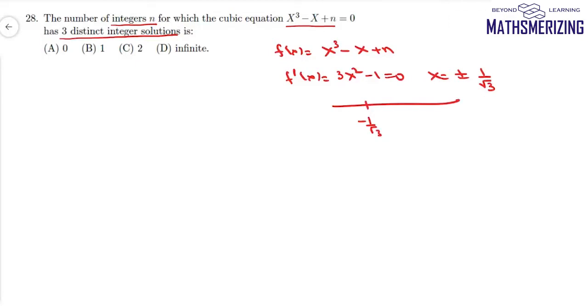So this is -1/√3 and this is +1/√3. So rightmost is positive, negative and positive. So the derivative changes sign at -1/√3, so here it is local maximum, and at 1/√3 it will be local minimum.